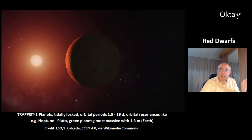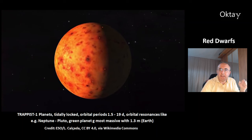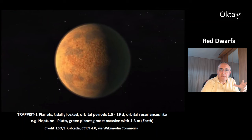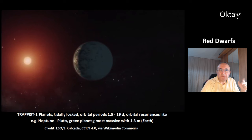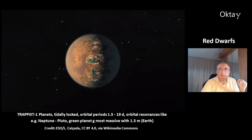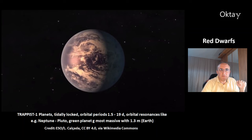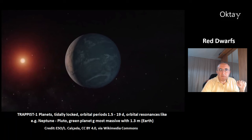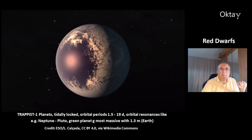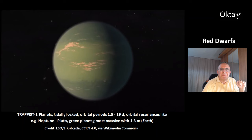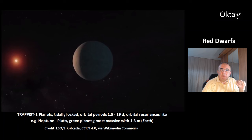This is a movie of the planets in the TRAPPIST-1 system. The innermost planet looks a bit like the Jupiter moon Io. All these planets are tidally locked, with orbital periods between one and a half to 19 days. They are in orbital resonance with each other, like Neptune and Pluto. Some planets are still too hot, while others could be candidates for life in the transition zone. Planet G is the most massive at 1.3 Earth masses, and TRAPPIST-1H is the outermost planet.